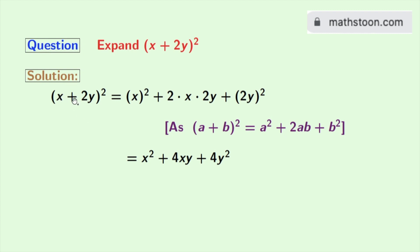So finally we get x plus 2y whole square as x square plus 4xy plus 4y square. And this is our final answer.